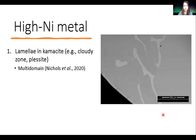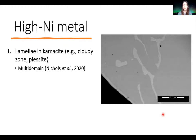Mesosiderites cooled so slowly that the tetrataenite islands in the cloudy zone actually grew too large, so they are in a multi-domain state. This is why the cloudy zone was not the focus of the study — we actually looked at the silicates instead, because multi-domain tetrataenite is not particularly helpful for paleomagnetic purposes.